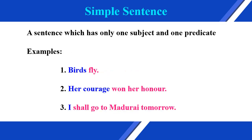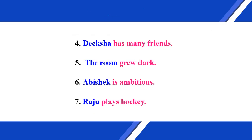A simple sentence is a sentence which has only one subject and one predicate. For example: birds fly; her courage won her honor; I shall go to Madurai tomorrow; Diksha has many friends; the room grew dark; Abhishek is ambitious; Raju plays hockey.